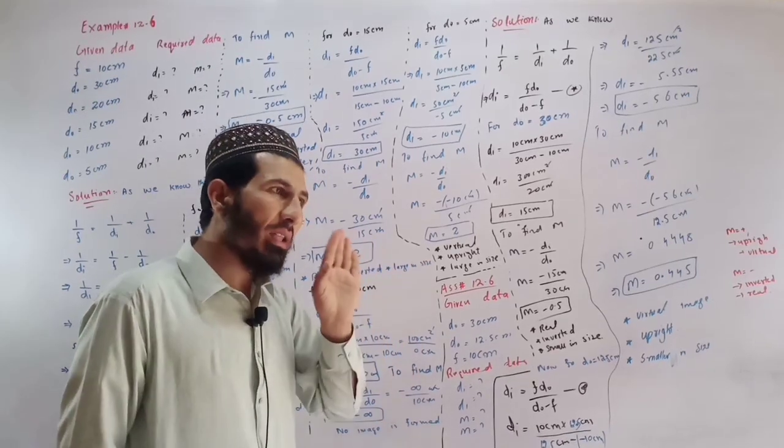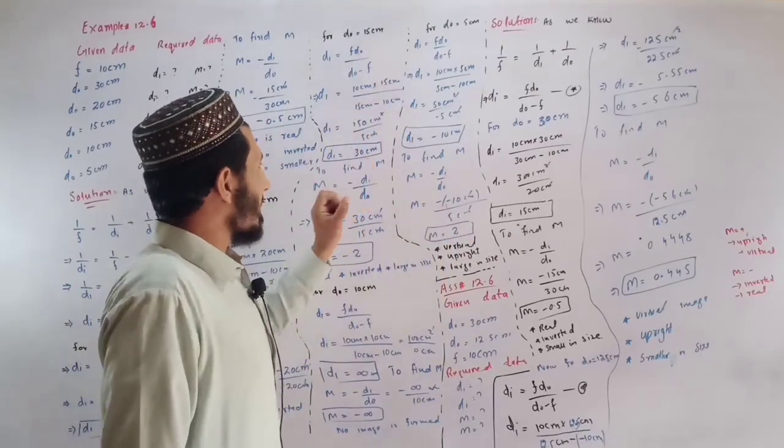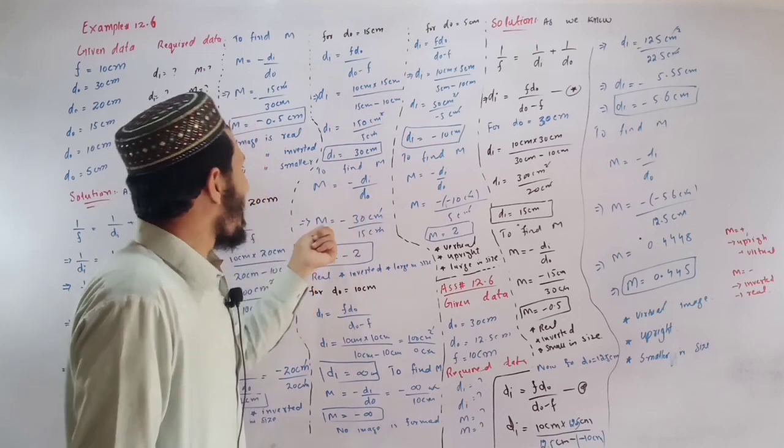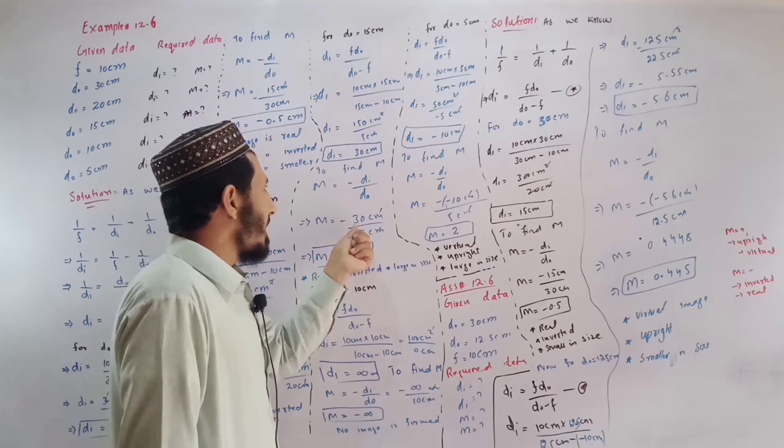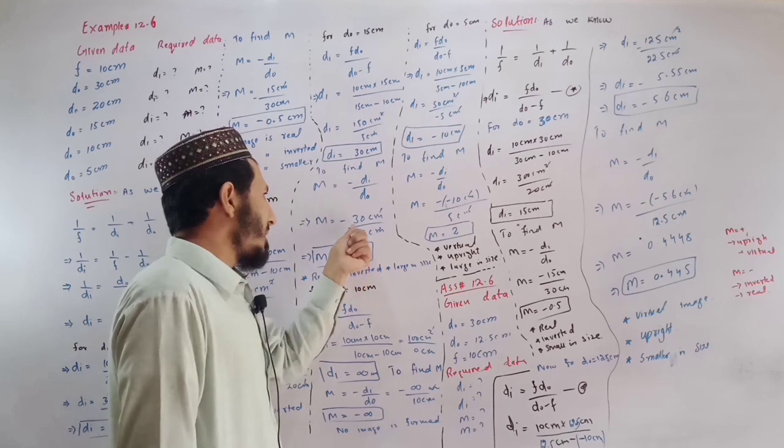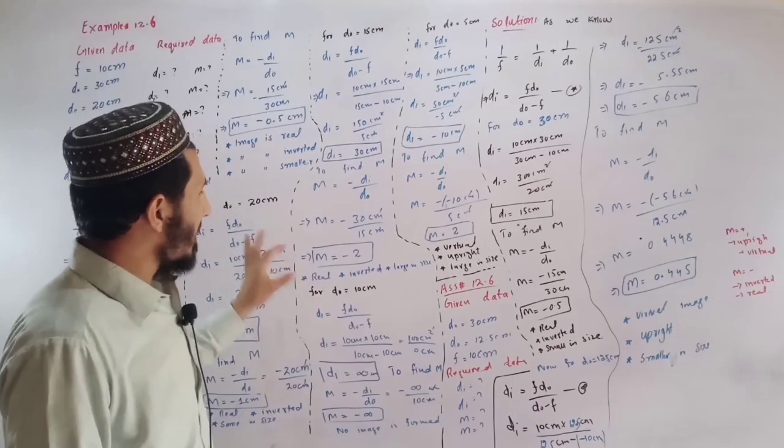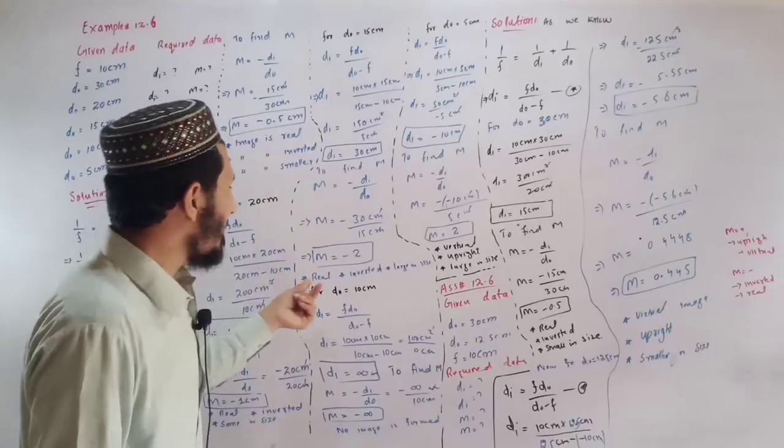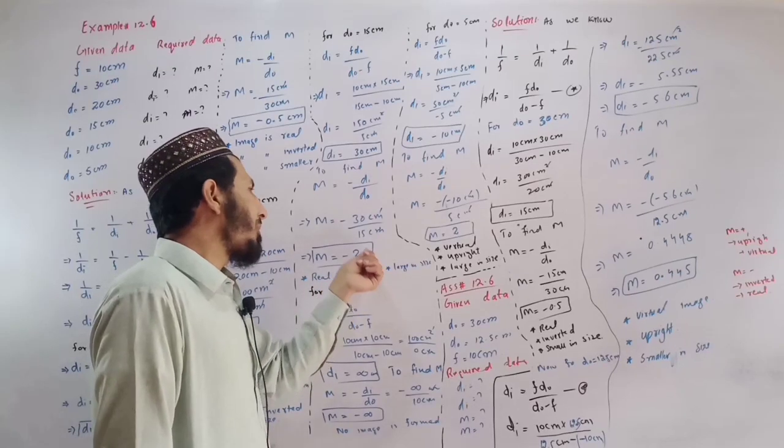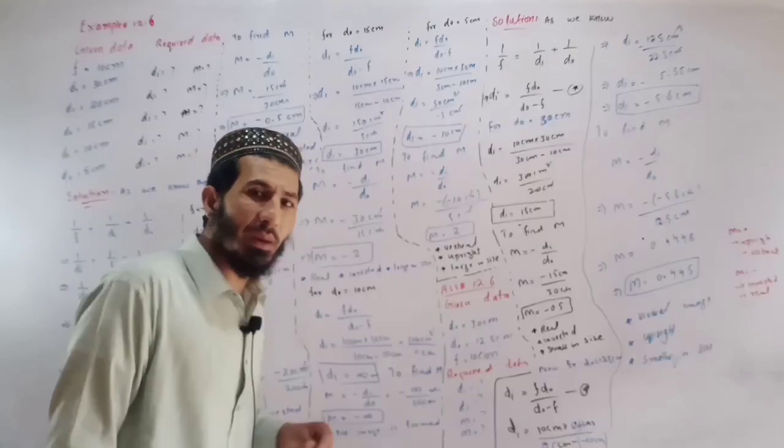M is equal to minus di divided by d0, 30 cm divided by 15 cm, so minus 2. The magnification is minus 2. The image is real, inverted, and larger in size.